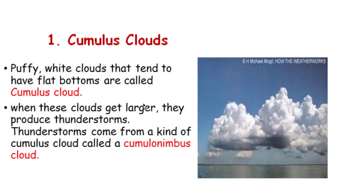Cumulus clouds are fluffy white clouds that tend to have a flat bottom. When these clouds get larger, they produce thunderstorms. The large thunderstorm form of a cumulus cloud is called cumulonimbus.